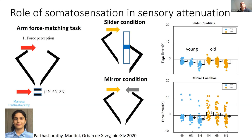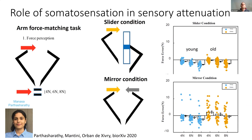Basically, we have two experiments where we found larger sensory attenuation and larger implicit adaptation — two proxies for internal model function — in older adults. But this seems to be completely uncoupled from any possible deficit in somatosensory activity. So we're left with the question: why is there a difference, or what could explain this larger internal model function in older adults if it's not somatosensory function?